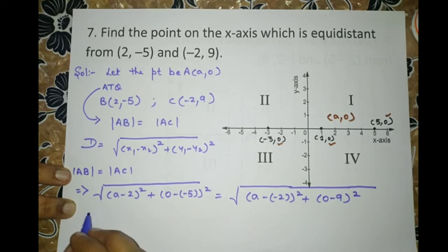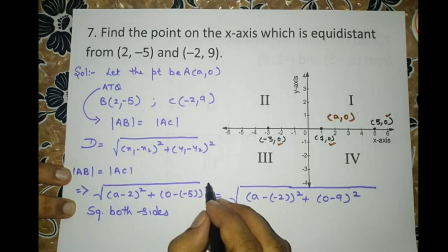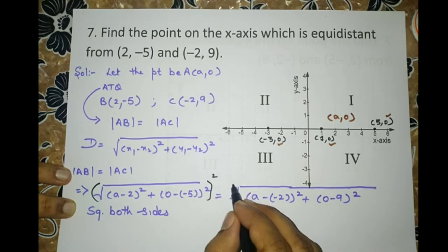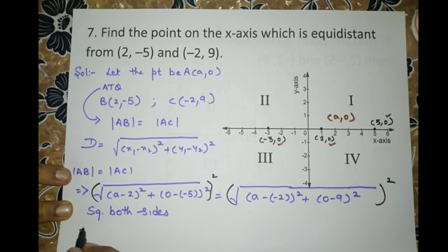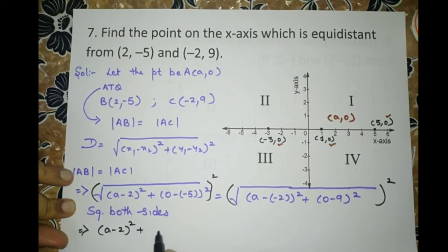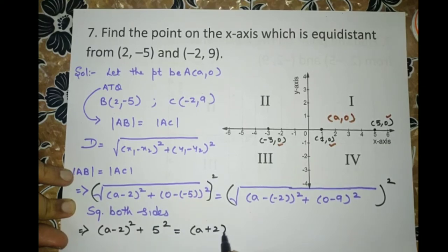Now we will square both sides. This way, the square root will go off. So the square root has got cancelled. So we are left with A minus 2 whole square plus minus minus is plus. So it is 5 square equals A plus 2 whole square plus 9 square.